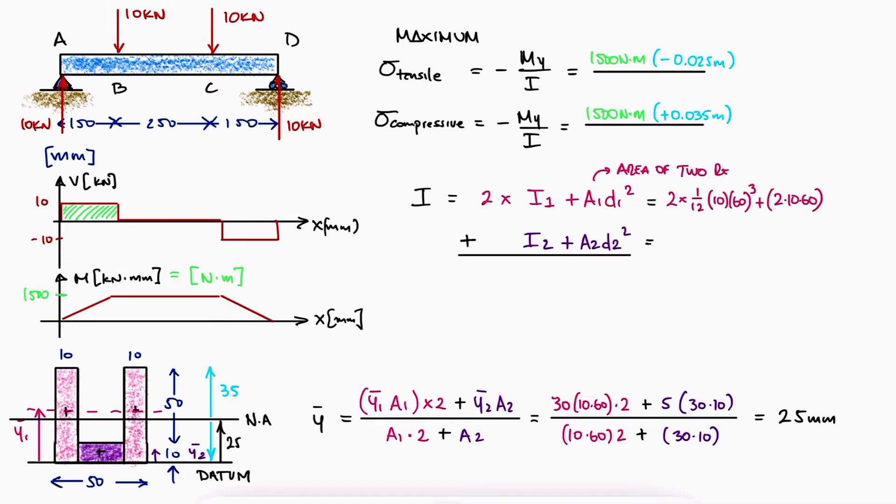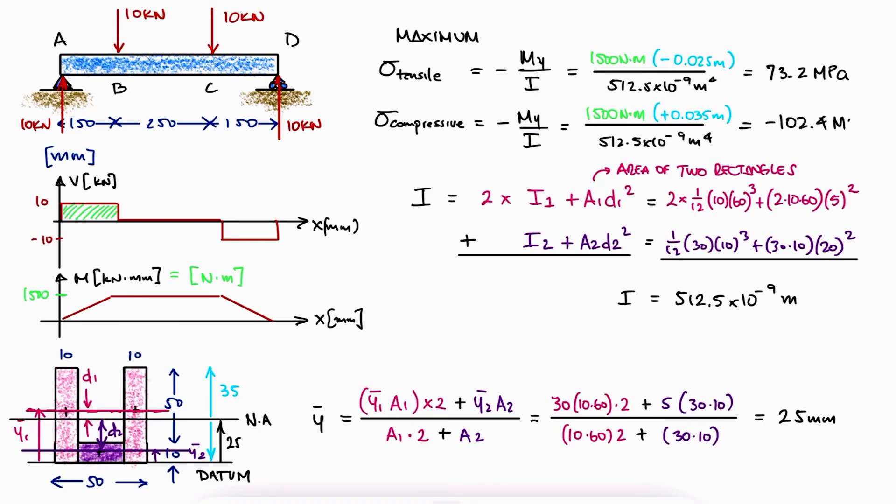Substituting the I and the area for each of the rectangles, we see that we need to find the distance from the neutral axis to each centroid, and with them, we find the value for the second moment of area. Substituting this value in the bending stress equations, we find the two stresses we were looking for.